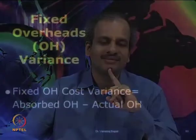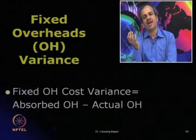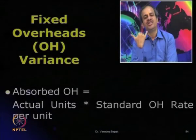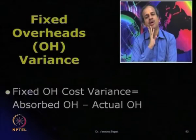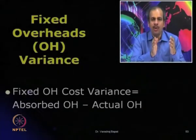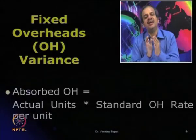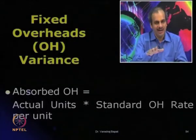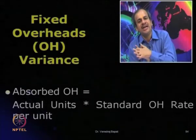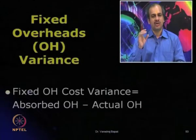How do you define fixed overhead variance? The total fixed overhead variance is calculated as absorbed overhead minus actual overhead. Absorbed overhead is actual quantity × standard overhead rate per unit. We make a budget for overhead, calculate the standard overhead rate per unit from that budget, charge that rate on each unit, and get the absorbed overhead. Absorbed overhead compared with actual overhead gives the fixed overhead cost variance.